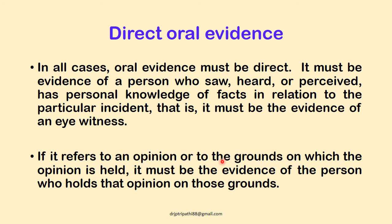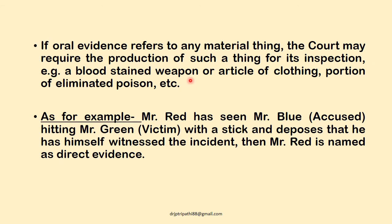If the evidence refers to an opinion or the grounds on which the opinion is held, it must be the evidence of the person who holds that opinion on those grounds. Many times oral evidence refers to material things. If oral evidence refers to material things, the court may require the production of such things for its inspection — for example, blood-stained weapons, clothing, or articles related to the crime, such as portions of eliminated poison.